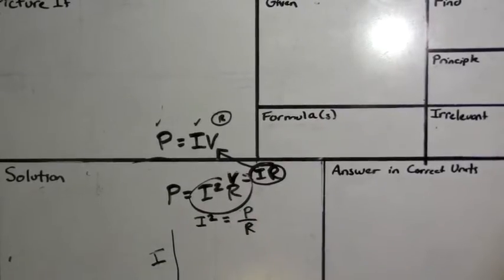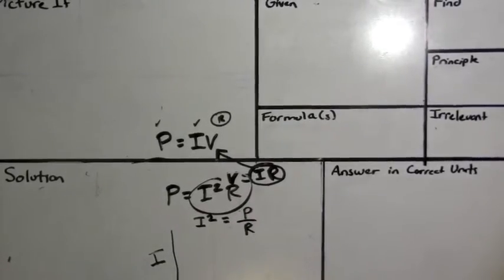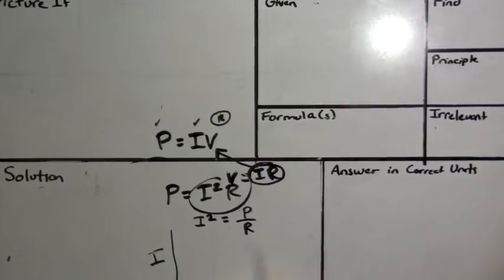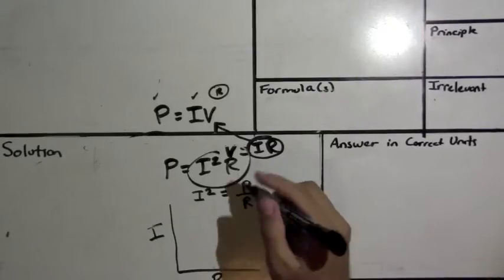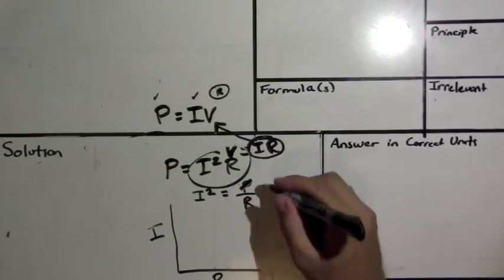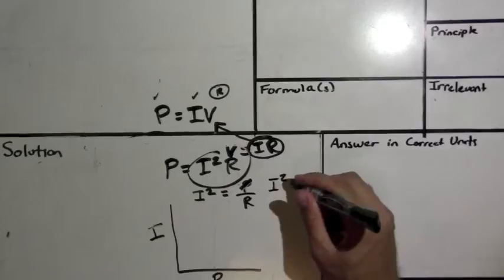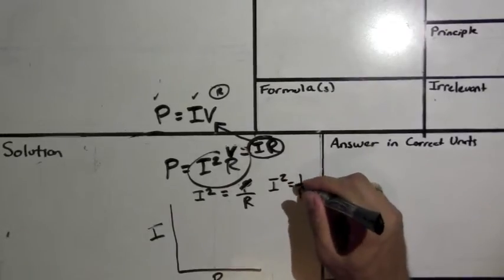Now remember whenever you're graphing variables if it's not on the graph it doesn't have anything to do with the graph. So what you can do is you can say okay well since that's not on the graph I can say alright well P cancels out. And what I'm left with is I squared equals 1 over R.